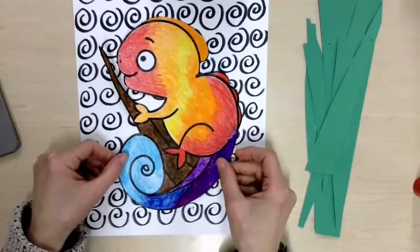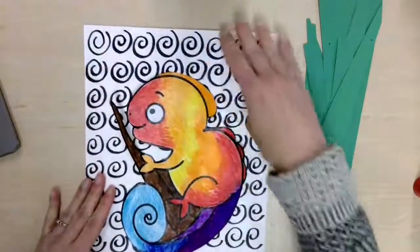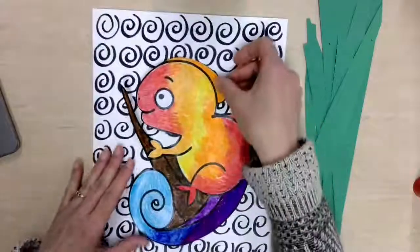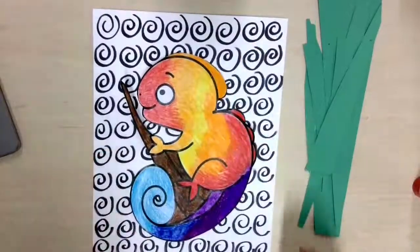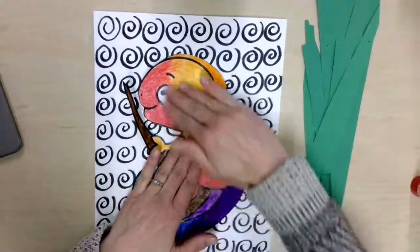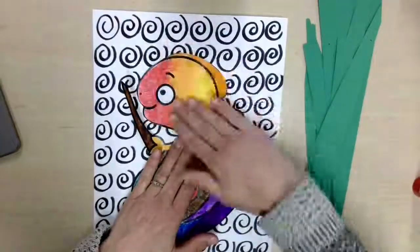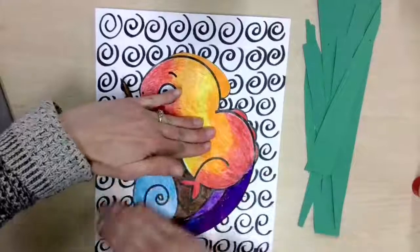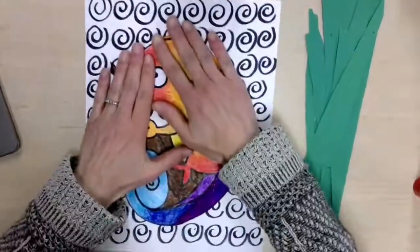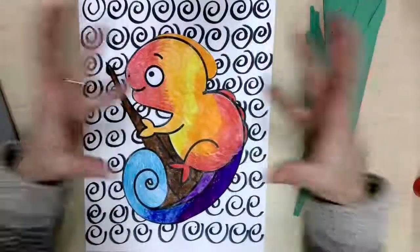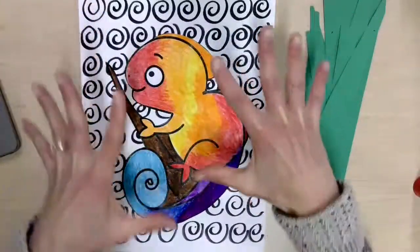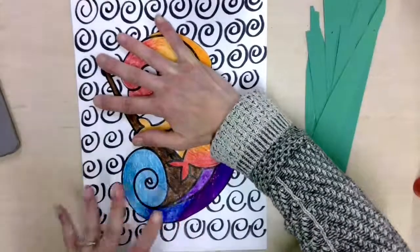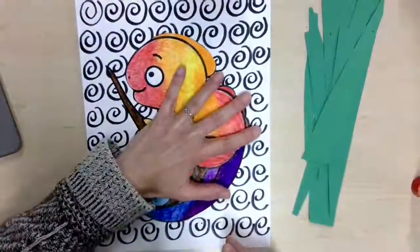and see if you have an equal amount of space all the way around. When you're happy with it, hold it in the middle and rub from the middle out to prevent wrinkles. Then I tell my students to have big basketball hands and just press and hold and count to ten until you've covered the whole thing.